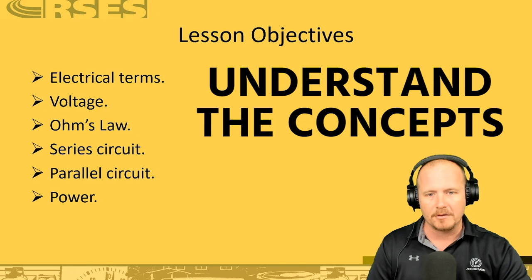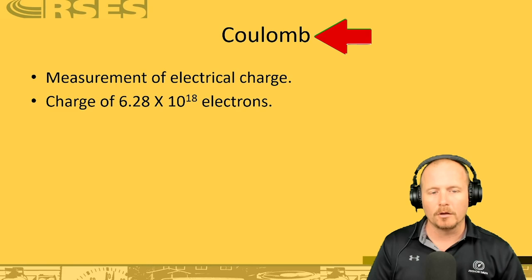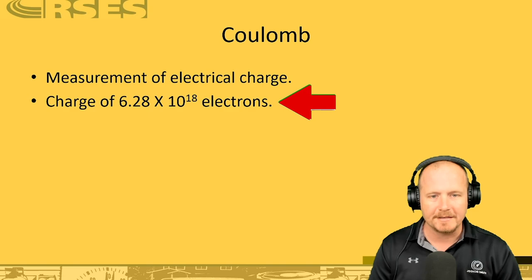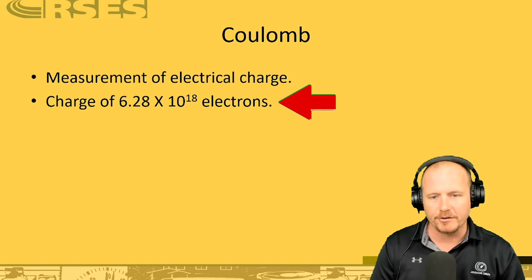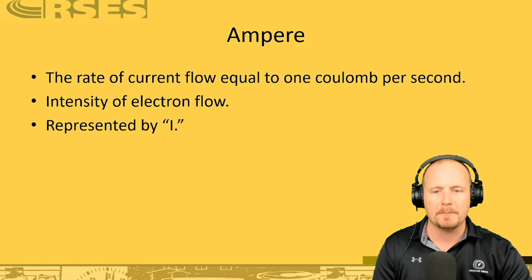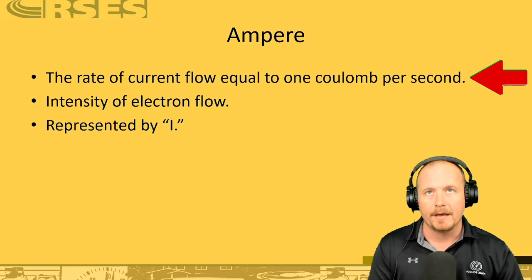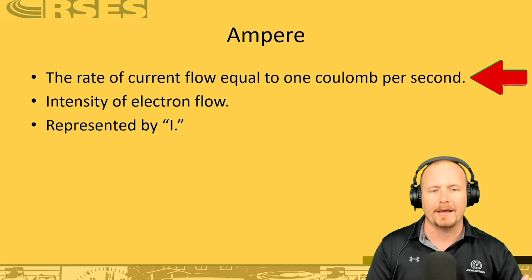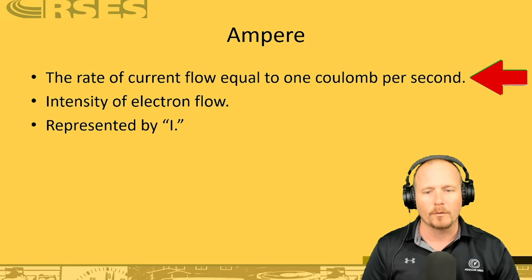One term that you may hear or see is a coulomb. A coulomb is a measurement of electrical charges — the charge of 6.28 times 10 to the 18th power electrons, which is an enormous number. The point is that a coulomb is an actual measurement of a number of electron charges. When we talk about an amp or ampere, an amp is defined as an electrical flow rate or current.